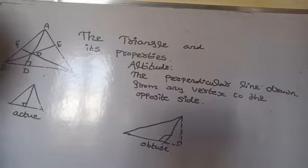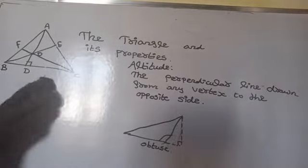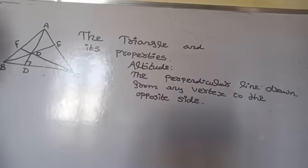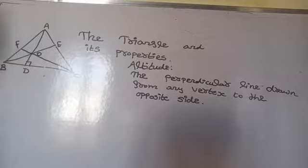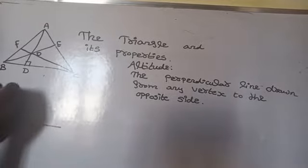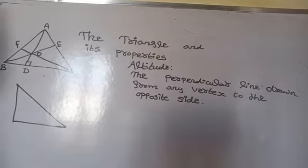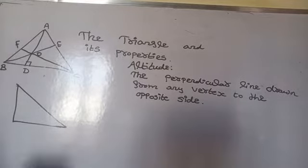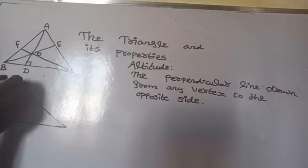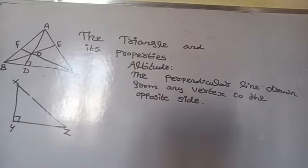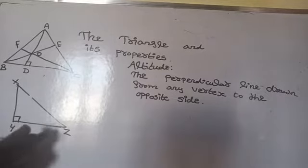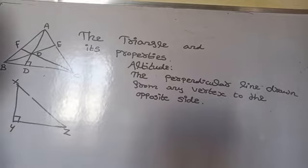Can you think of a triangle in which two altitudes of the triangle are two of its sides? Yes — in a right angle triangle, two altitudes are two of its sides. For example, in right triangle XYZ where angle Y is 90 degrees, XY and YZ are the two altitudes, other than the hypotenuse.